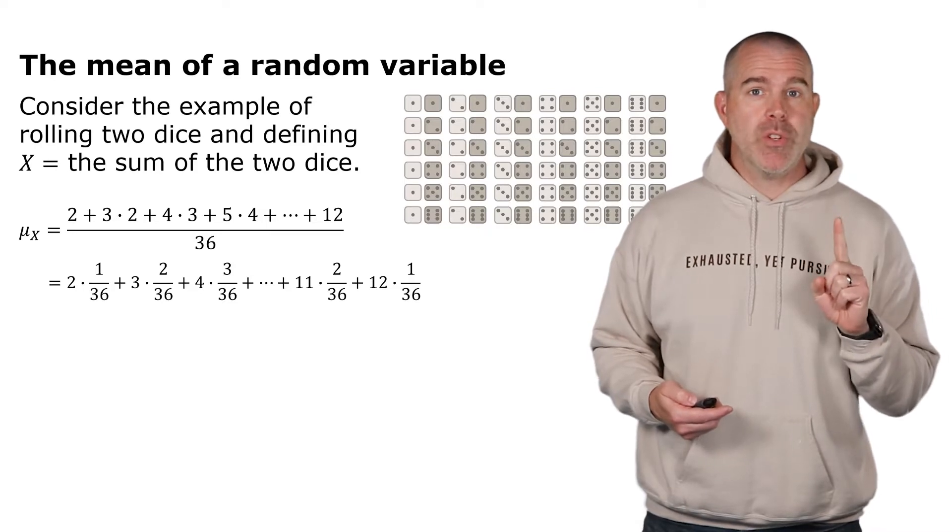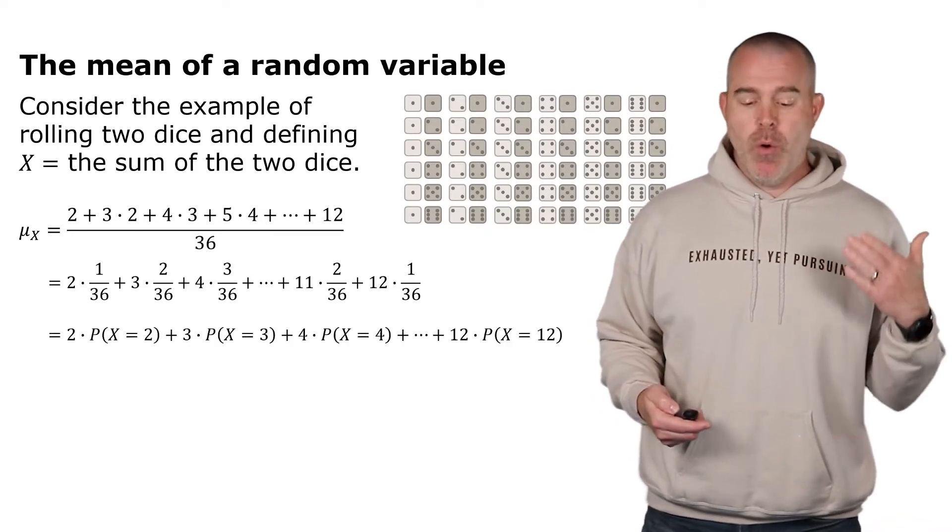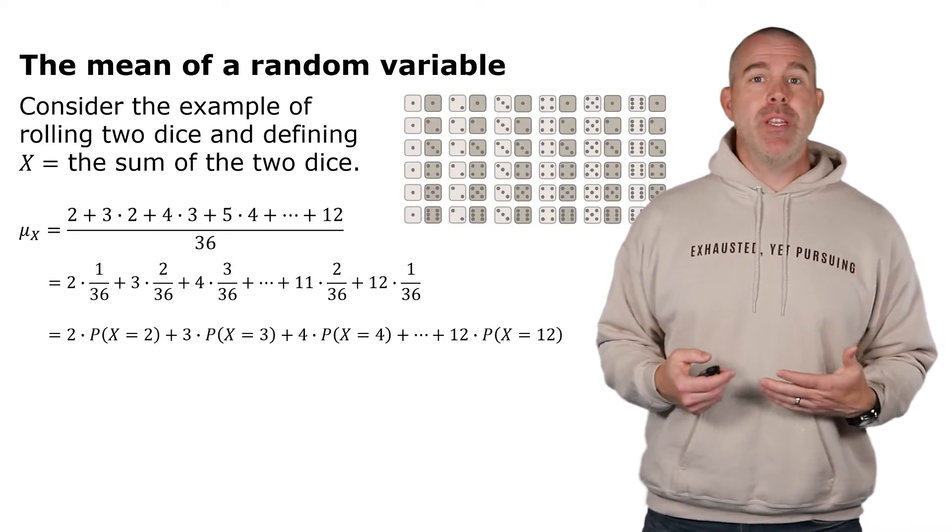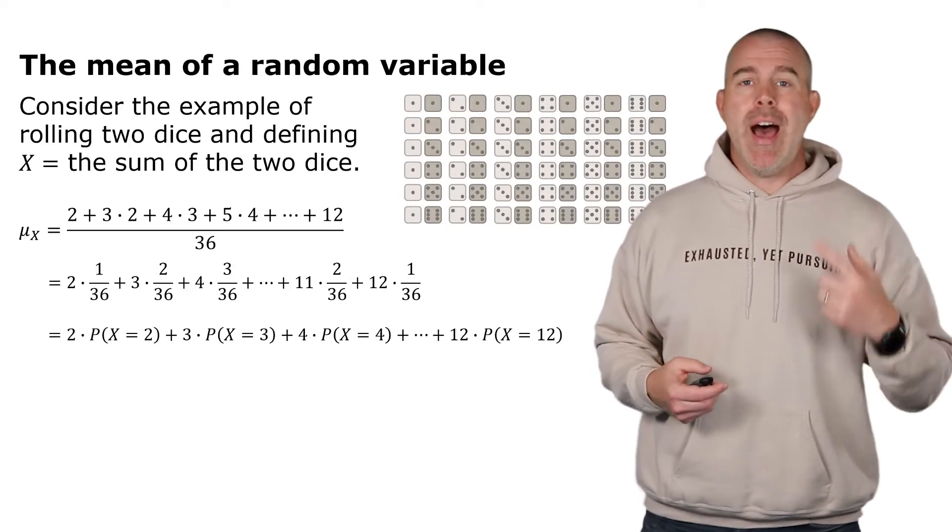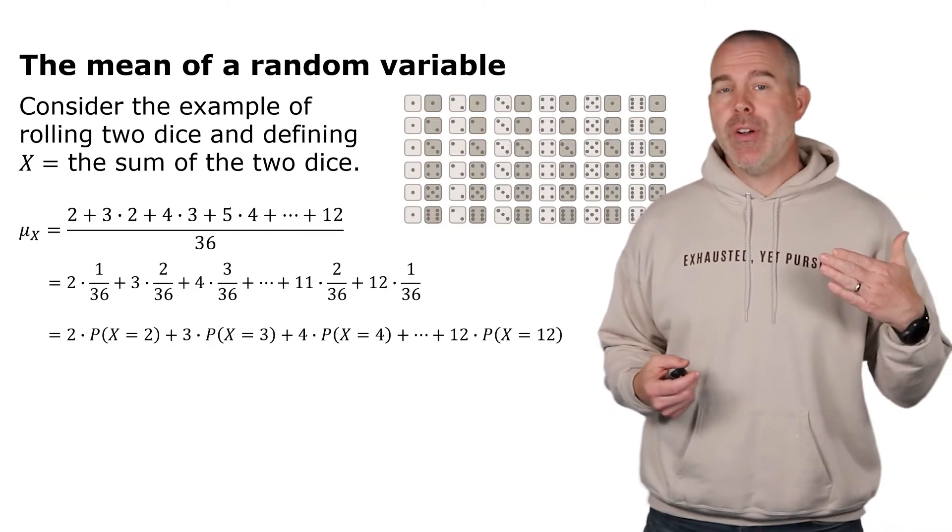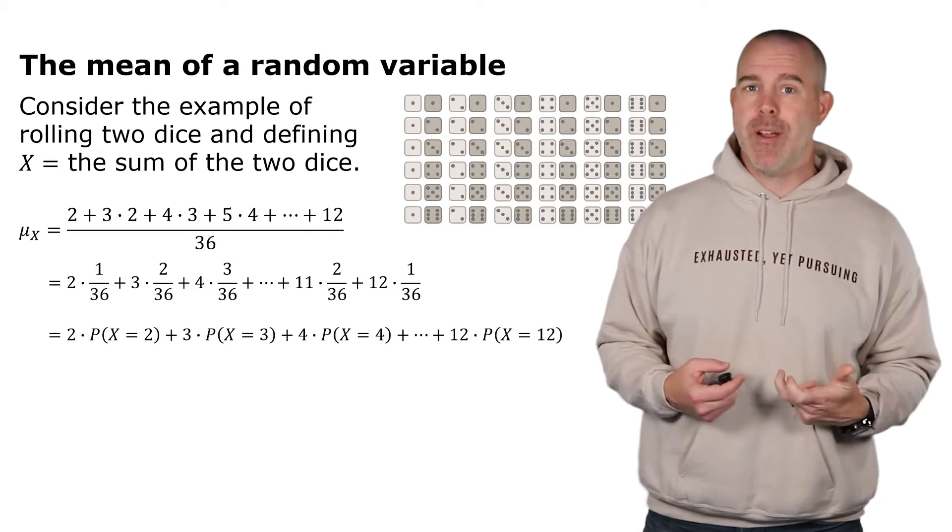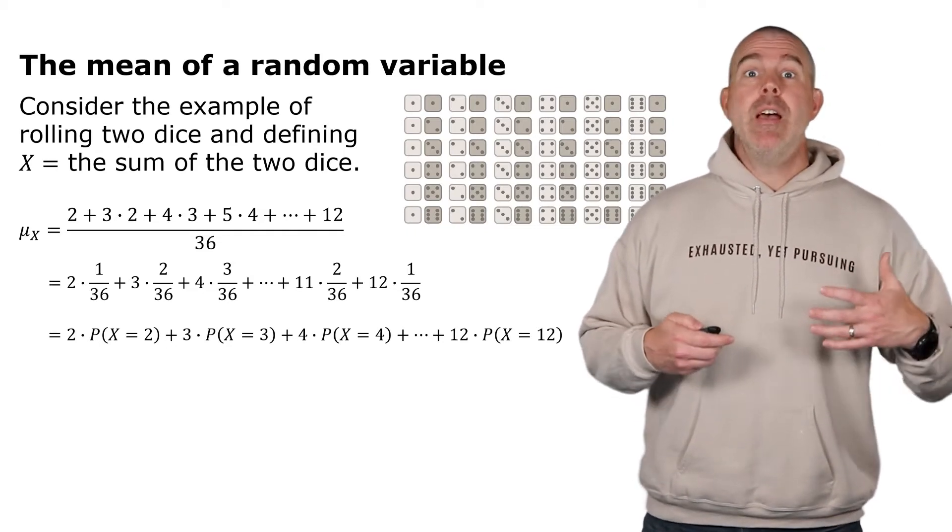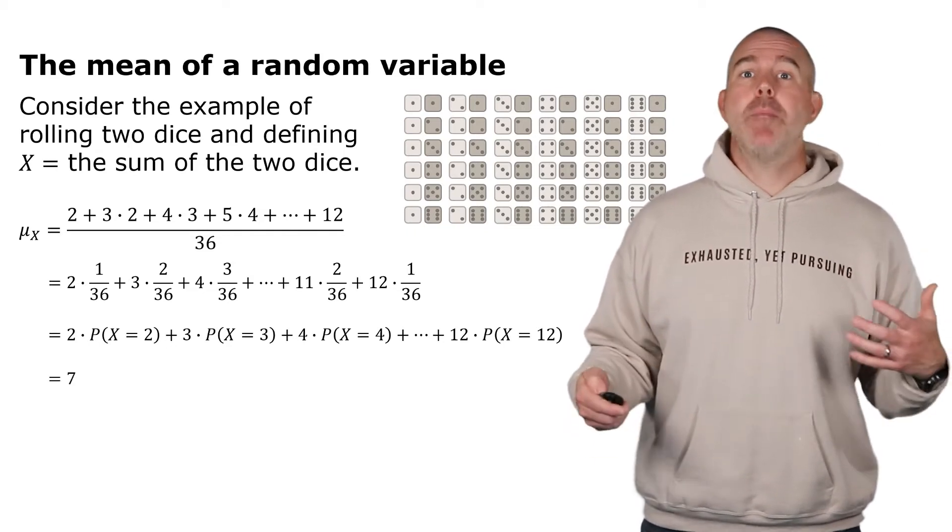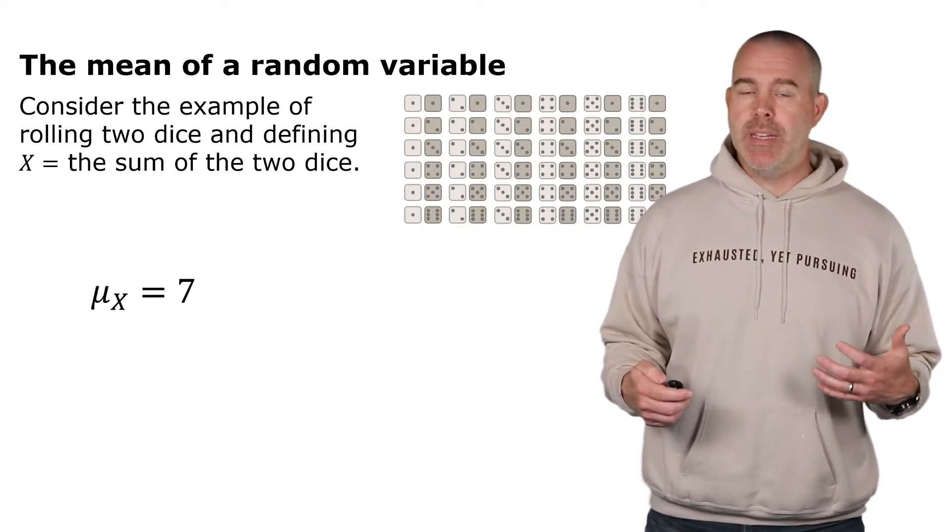But what are those 36s? Well, those are the probabilities. That one over 36 is the probability of getting a sum of two. There's only one out of the 36 total possible outcomes. The two out of 36 for the three? Well, that's the two ways to get a sum of three, etc. So if we multiply all those together, add them all up, we get seven. That means the mean of this random variable is seven.